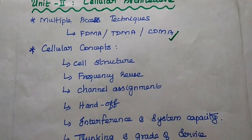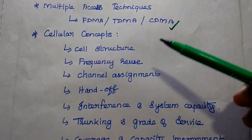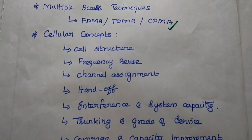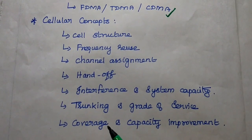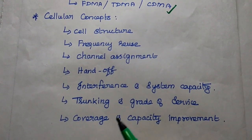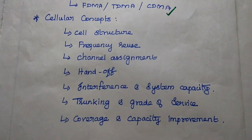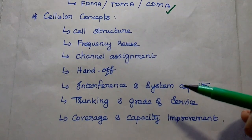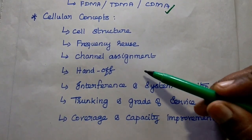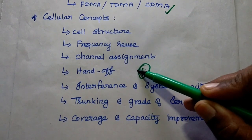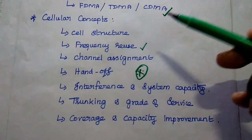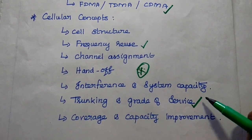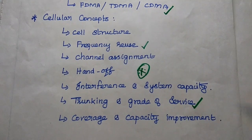The second half covers cellular concepts: cell structure, frequency reuse, channel assignment, handoff, interference and system capacity, trunking and grade of service, and coverage and capacity improvement. We can expect a question from handoff, which is very important, as well as from frequency reuse and trunking and grade of service. These are all important topics in Unit 2.